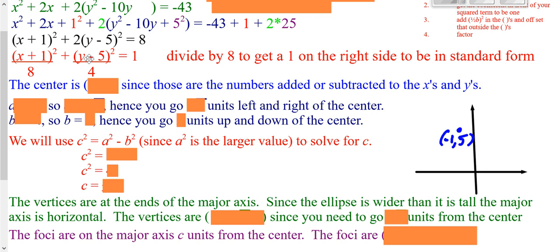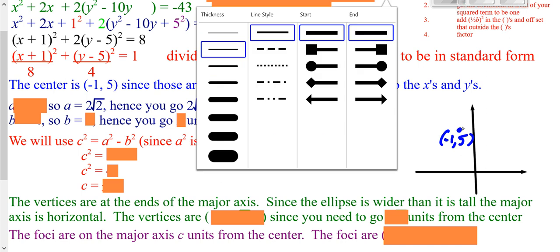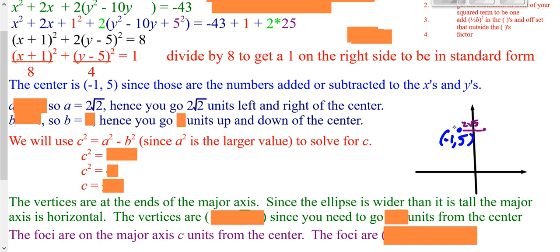Now it's in proper form. The opposite of what's after x and the opposite of what's after y gives your center. The square root of what's underneath x is 2√2, which tells you how far to go left and right from your center. The square root of what's underneath your y's is 2, so you go 2 units up and down. We can draw in your ellipse. Even though this one isn't overly elliptical — it's somewhat circular — the eccentricity would be close to 0.